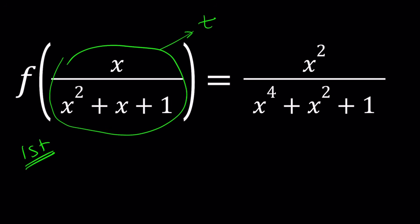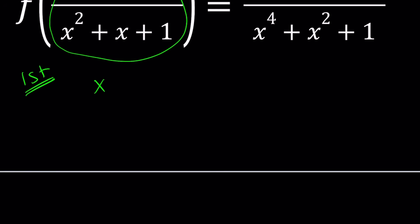But of course, the right-hand side needs to be in terms of t as well. So I need to solve for x in terms of t. Make sense? Okay, great. Let's go ahead and write this down.